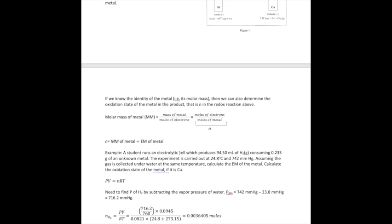Here's an example. You run an electrolytic cell that produces this much hydrogen gas and you determine that during the experiment you lose 0.233 grams of your metal. You measure the temperature and pressure, and you collect that gas underwater at that same temperature. You're being asked to calculate the equivalent mass of the metal, and then the oxidation state assuming it's copper.